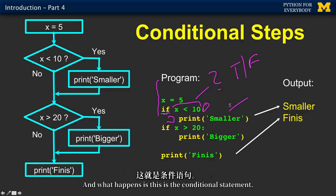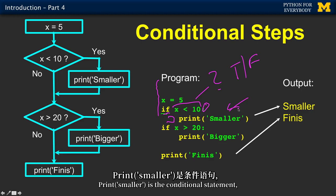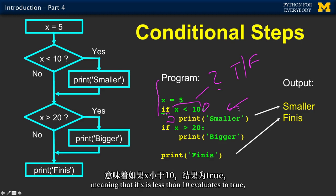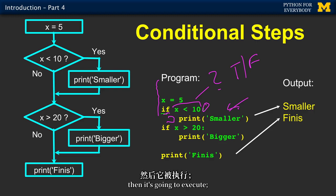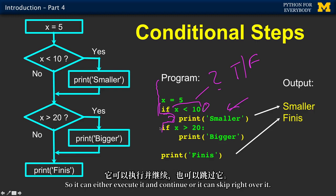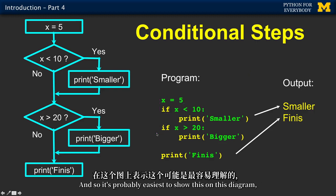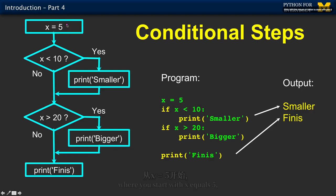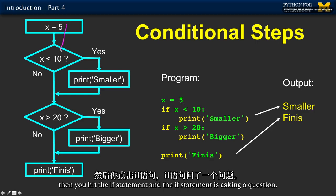What happens is this is the conditional statement. Print smaller is the conditional statement. Meaning that if x is less than 10, it evaluates to true, then it's going to execute, otherwise it's going to be skipped. So it can either execute it and continue, or it can skip right over it. It's probably easiest to show this on this diagram.